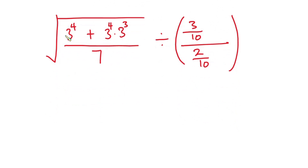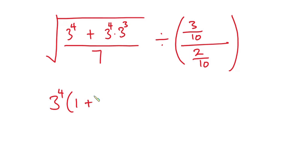Now you can see that we have three to the fourth power here and three to the fourth power here, so I can take it as a common factor. We get three to the fourth power times one plus three to the third power.